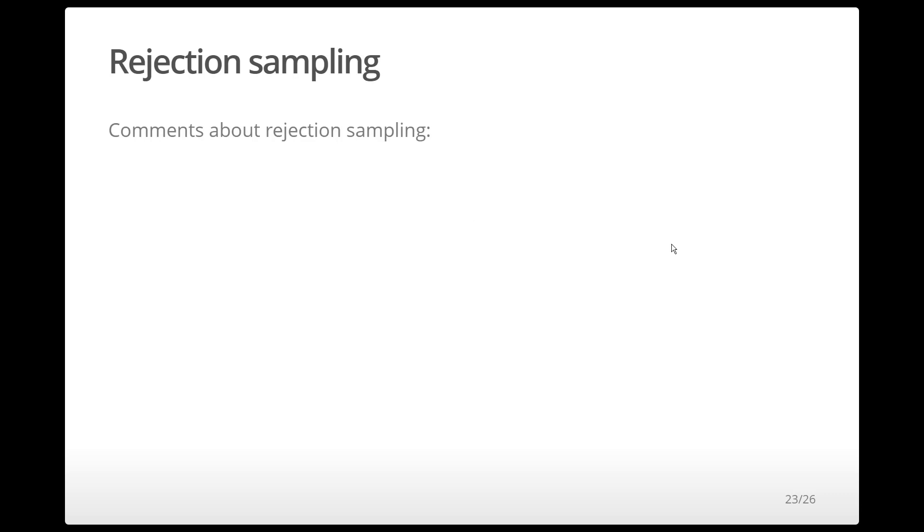Here are a few tips when doing rejection sampling. First, the unnormalized density q is almost always used instead of p. You don't have to make any changes to the algorithm except using q instead of p.